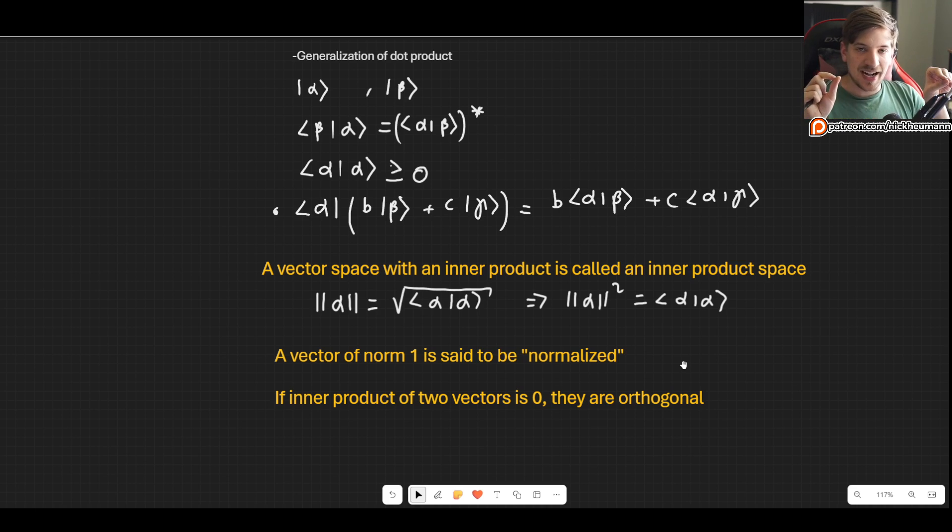If we have two vectors and their inner product is zero, then we say that those vectors are orthogonal. If alpha and beta, their inner product is zero, then those two vectors are orthogonal. Orthogonality is a generalization of the concept of perpendicularity. When something is perpendicular, we now say it is orthogonal.